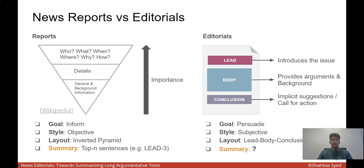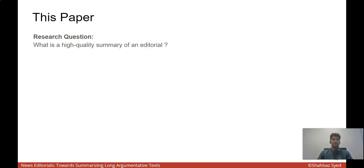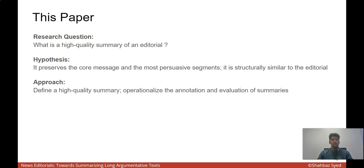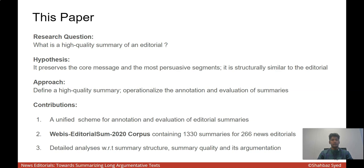But what is a good summary of an editorial? In this paper, we tackle this question of what is a high-quality summary of an editorial. We hypothesize that such a summary preserves the core message and the most persuasive segments. It is also structurally similar to the editorial. We approach first by defining what a high-quality summary is, and then we use this definition to collect and qualitatively evaluate our summaries. We make three specific contributions. We propose a unified scheme for annotating and evaluating high-quality summaries, using which we create a corpus of 1,330 summaries that are manually evaluated for quality, and we provide detailed analysis with respect to summary structure, summary quality, and its argumentation.